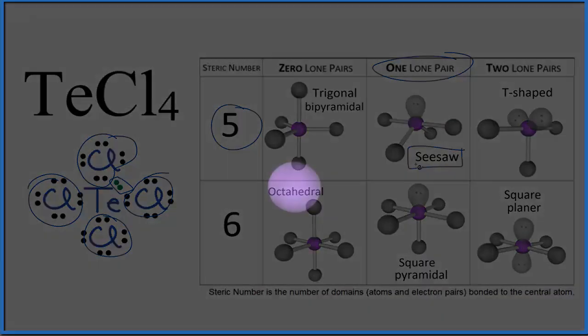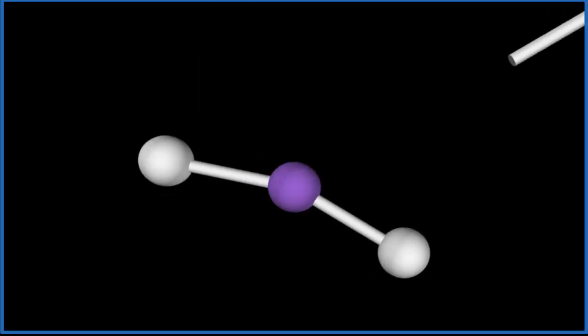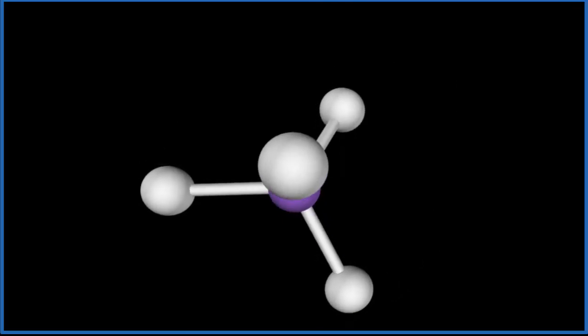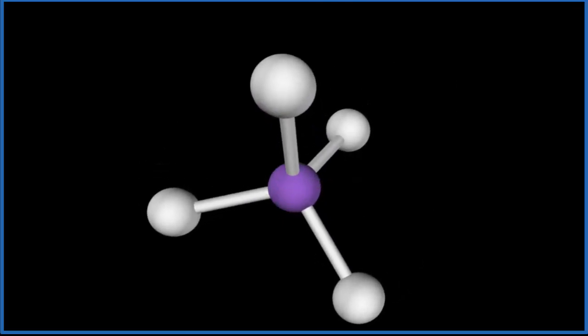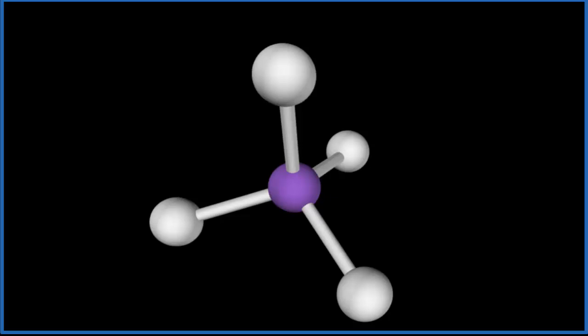Let's look at that in three dimensions. So the central atom here, that's the Te, the tellurium. We have four chlorine atoms. Let's put them around one, two, three, they're spreading out four, and they spread out to be as far away as they can from each other. That gives us a tetrahedral molecular geometry.